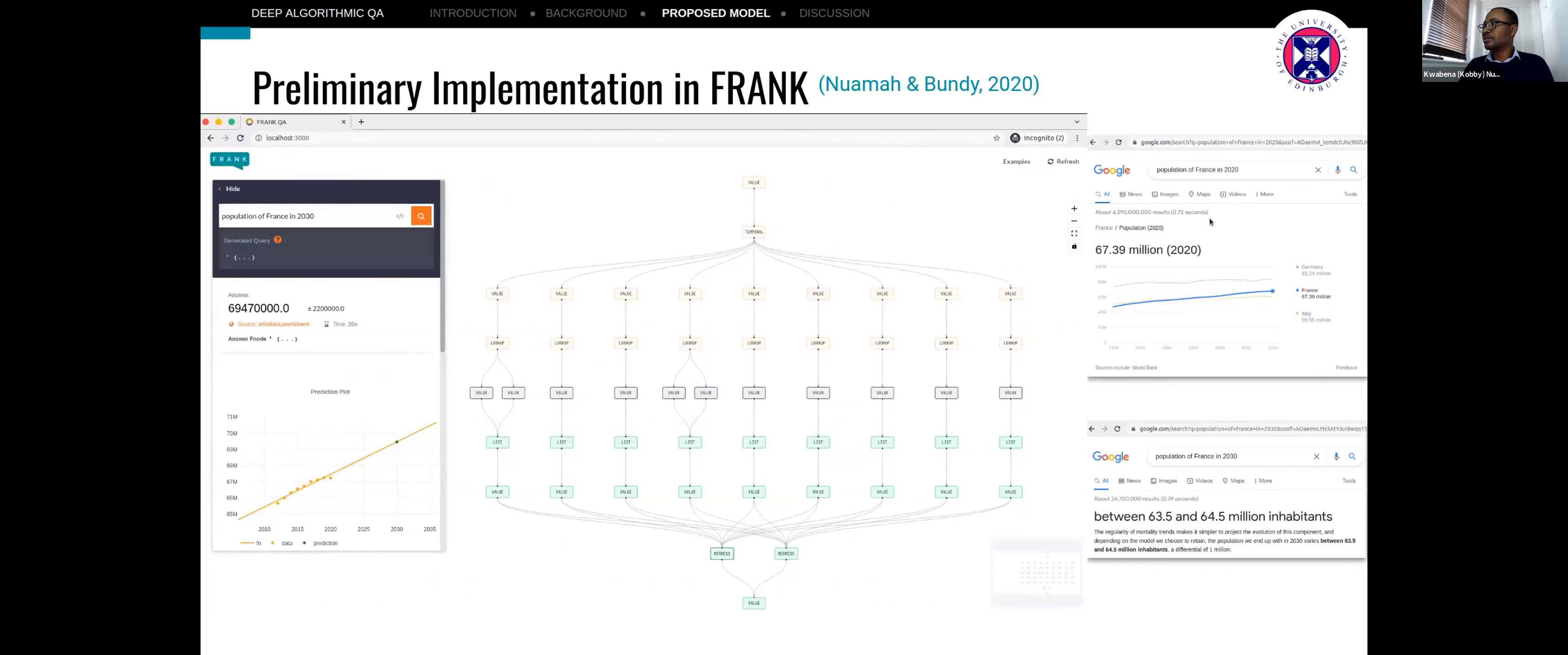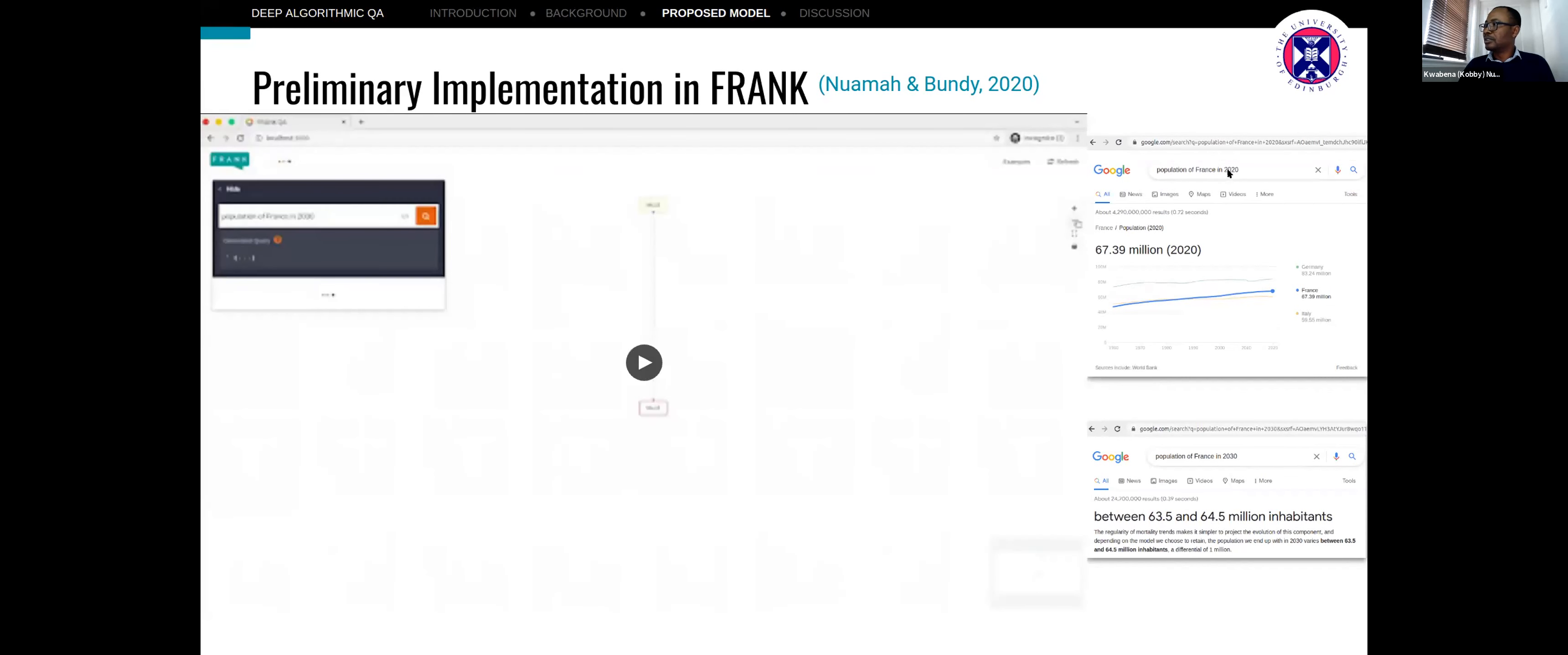Now compare this to the example here on Google, where we try to ask the same question using a simple query for 2020. We immediately notice that Google answers this by simply looking up the data from the World Bank dataset and gives you a very nice graph of it. However, you switch the question to one which requires some kind of prediction or inference, and then it fails completely.